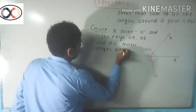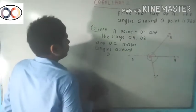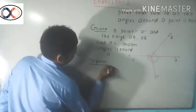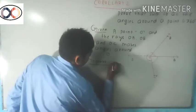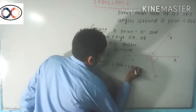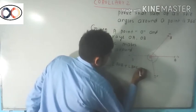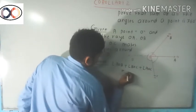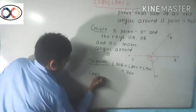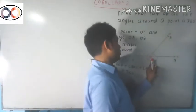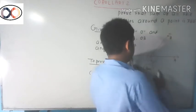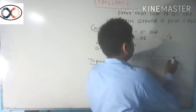To prove: angle AOB plus angle BOC plus angle AOC equals 360 degrees. Construction: Draw ray OD opposite to ray OA.